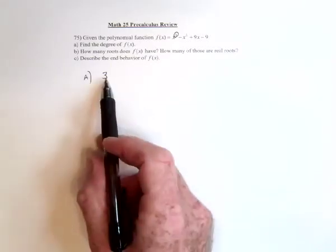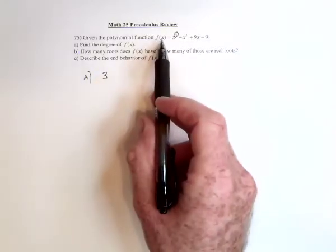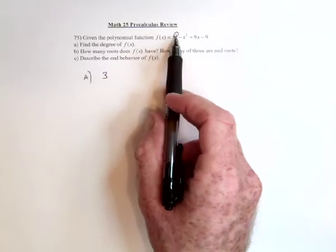The degree tells you the most number of roots that it can have. So if you set this thing equal to 0, and you solve for x, there can be as many as 3 answers.